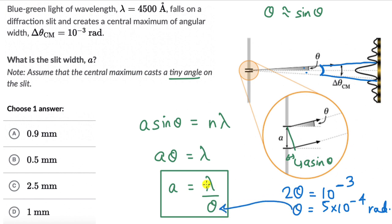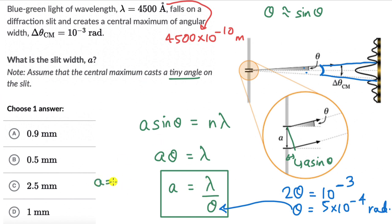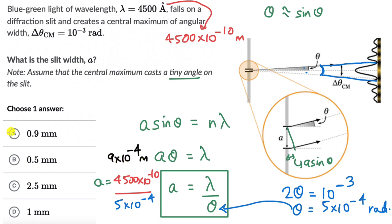Substituting into a = λ / θ: λ = 4500 angstroms = 4500 × 10⁻¹⁰ meters, and θ = 5 × 10⁻⁴ radians. So a = (4500 × 10⁻¹⁰) / (5 × 10⁻⁴) = 9 × 10⁻⁴ meters, which is 0.9 millimeters.